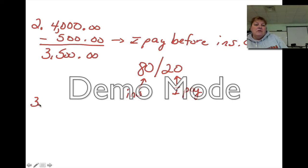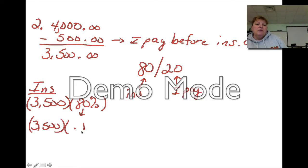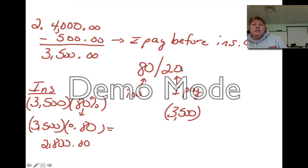So it is $3,500. Then I'm going to take the insurance is going to pay 80% of it. Now 80%, they're going to pay 80%. Keep in mind, I move my decimal two places to the left. So I'm going to say $3,500 times 0.80. Remember, I move my decimal two places to the left, so 0.20.